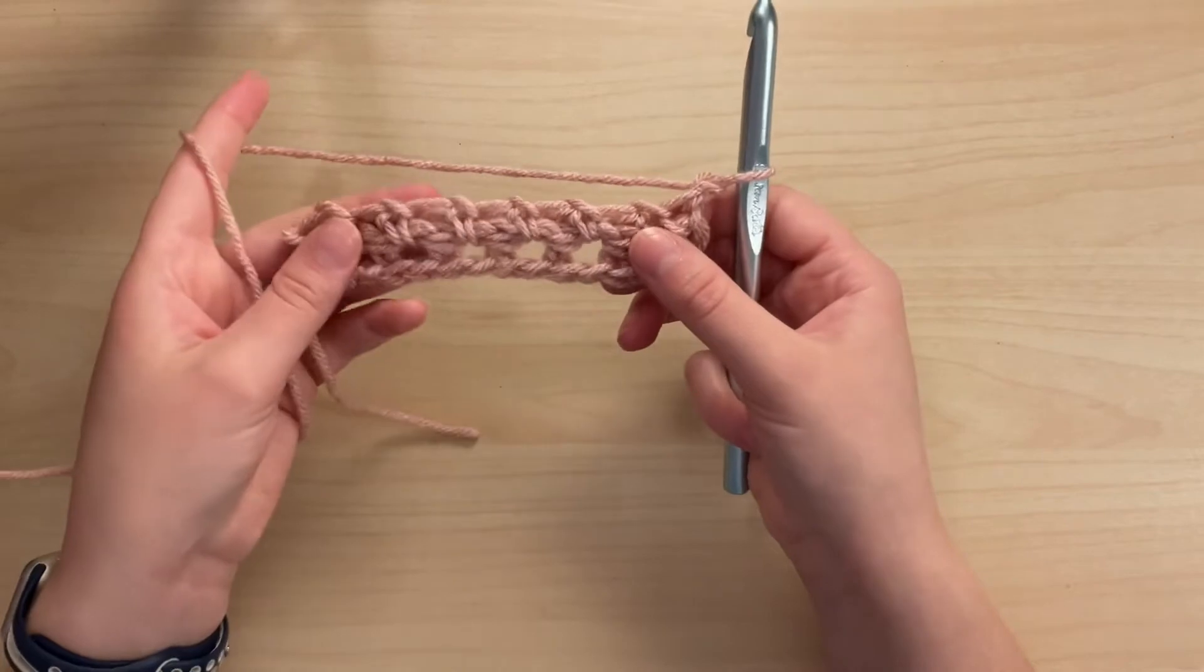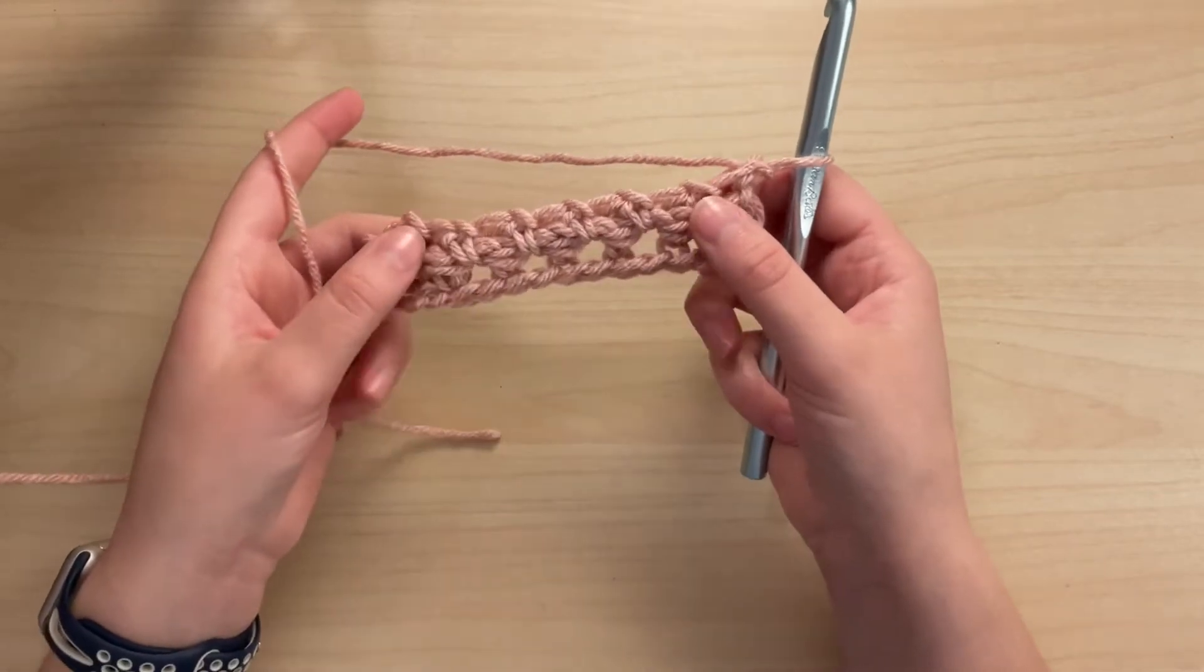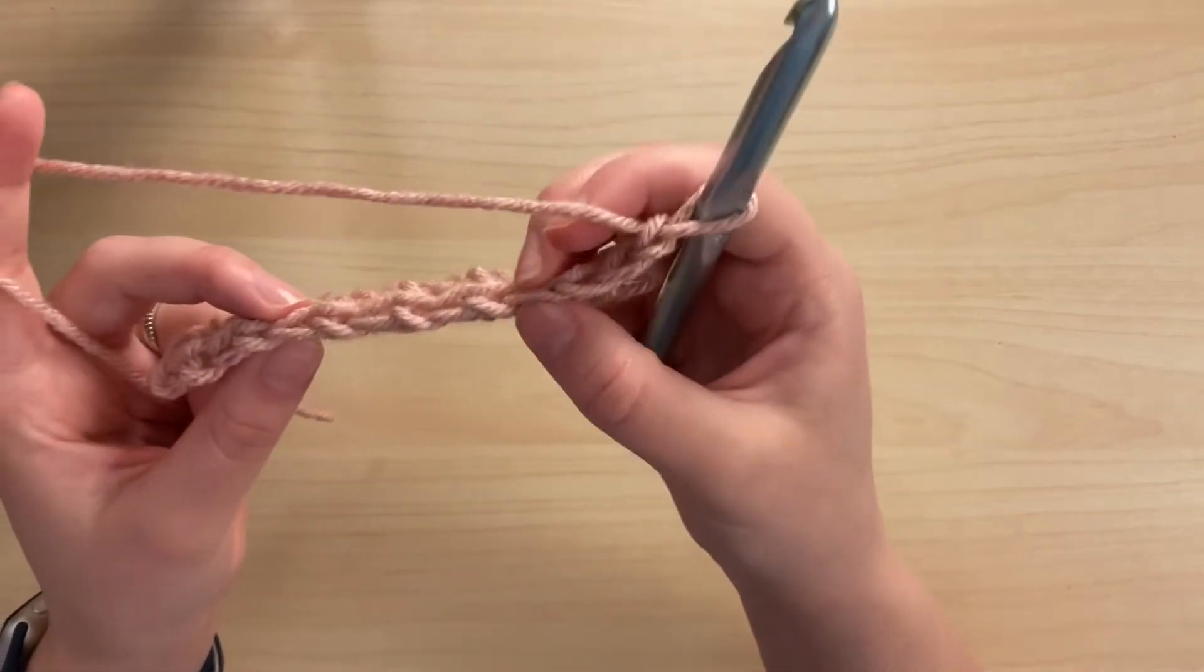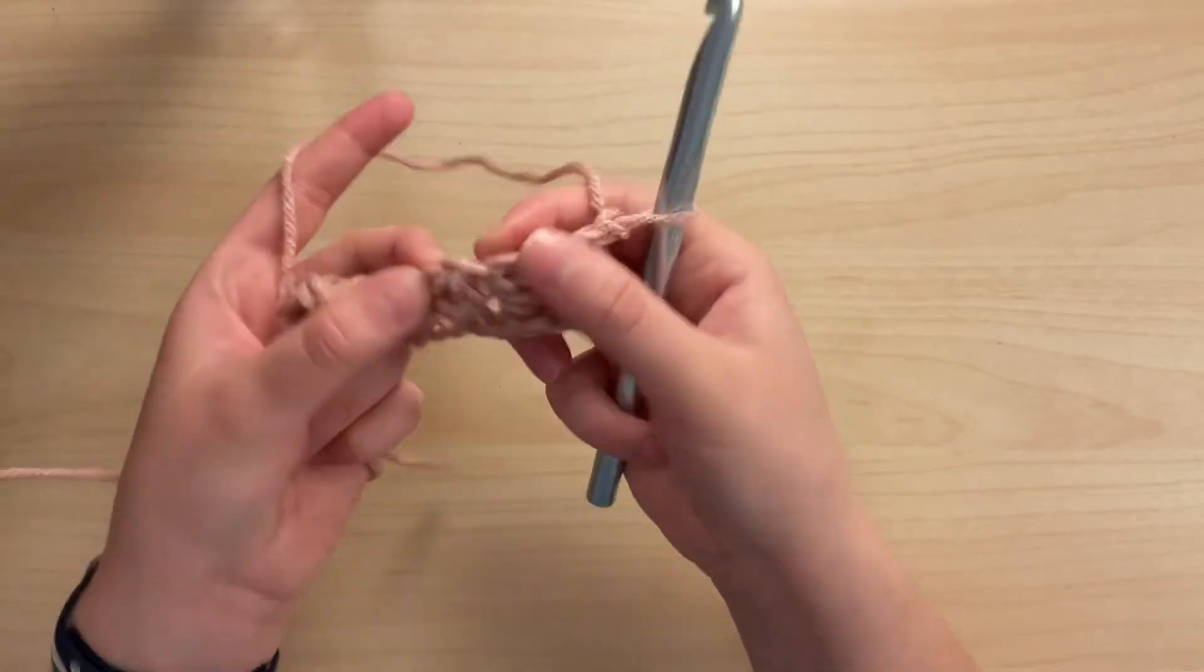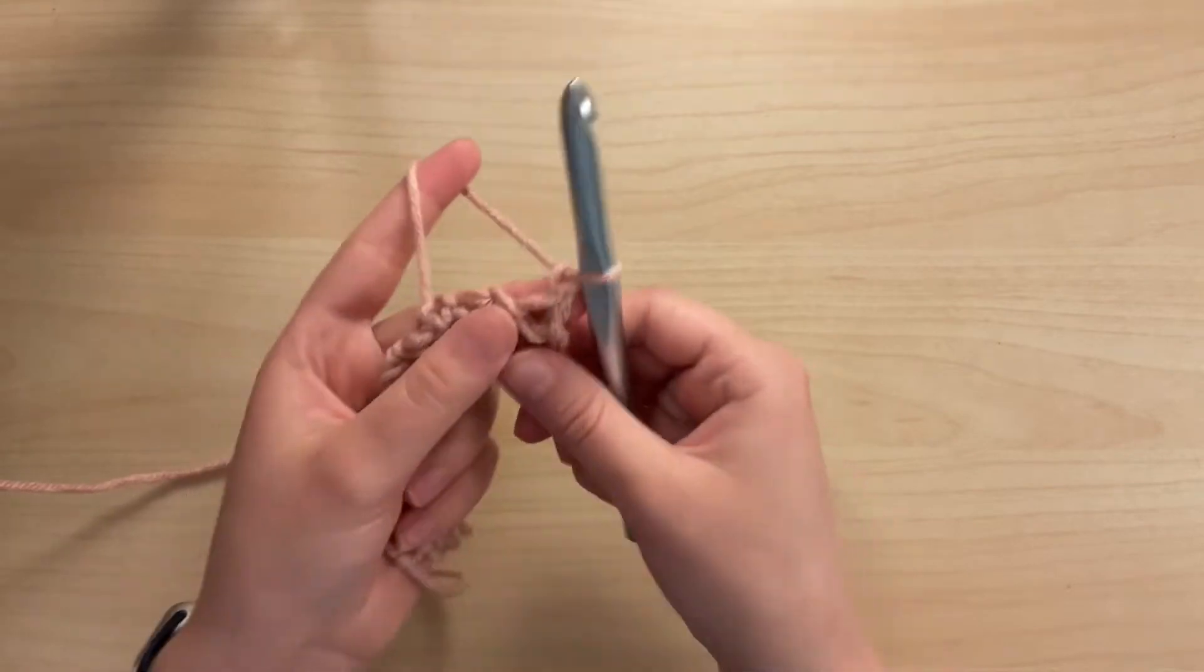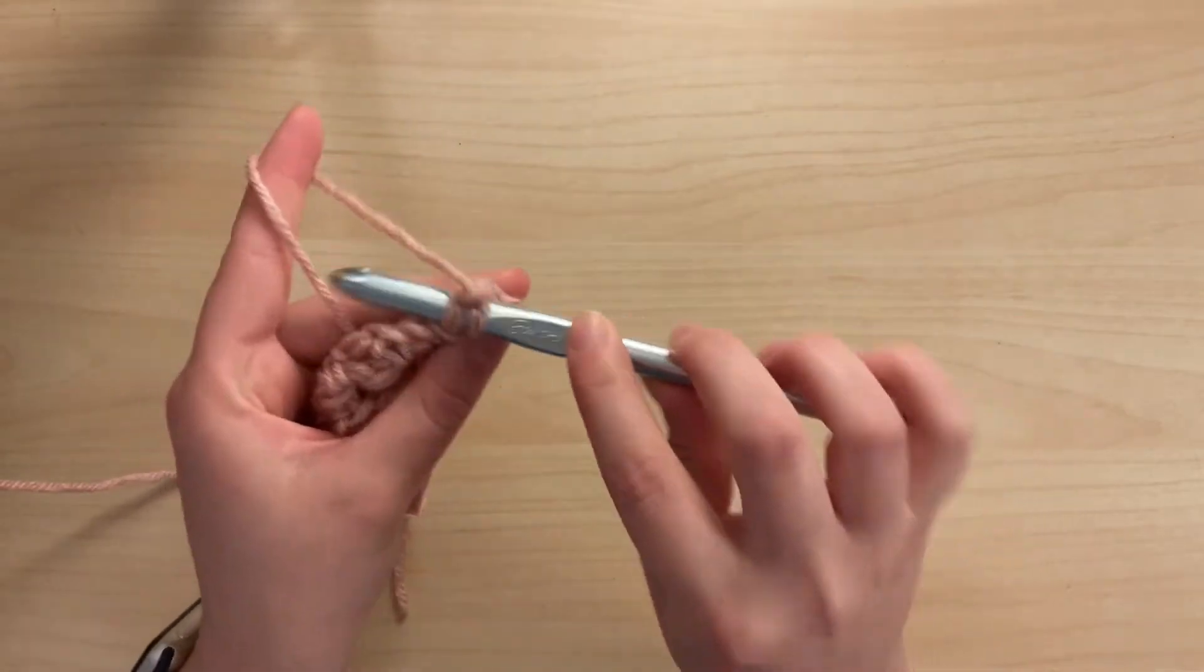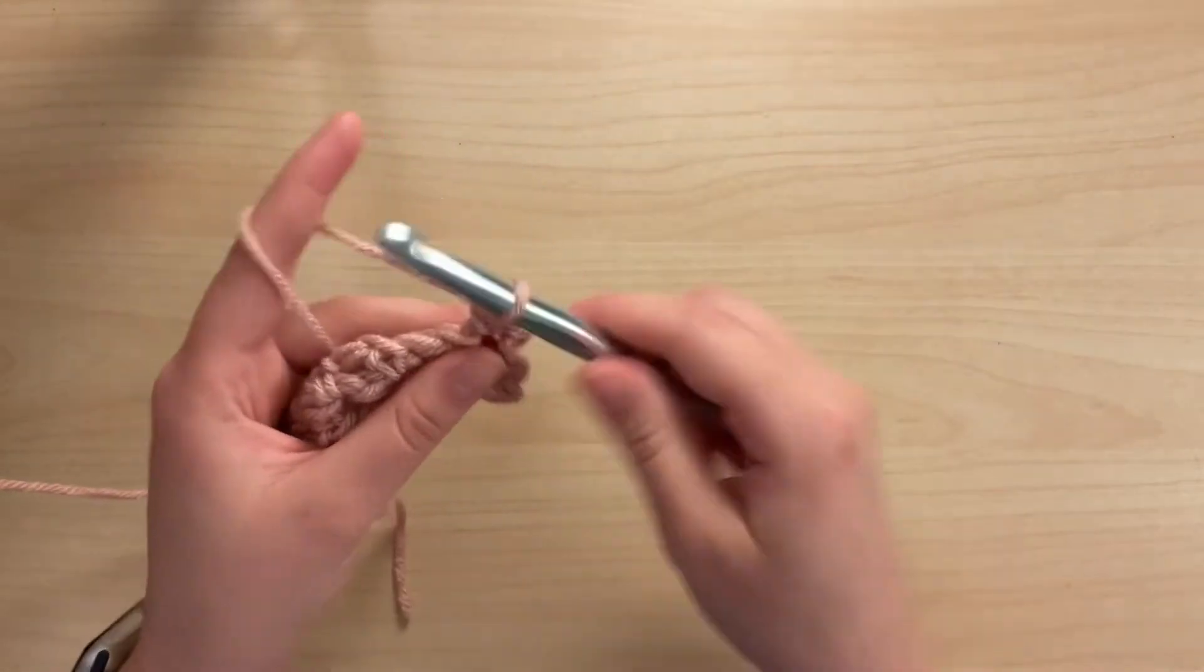And now we're on to row three with a chain one and a turn. Row three is exactly the same as row one, except we're working into the single crochet two together spaces for the single crochet and we're just chaining one over the chain one spaces. So you'll single crochet into the first stitch of the row, then we'll chain one.